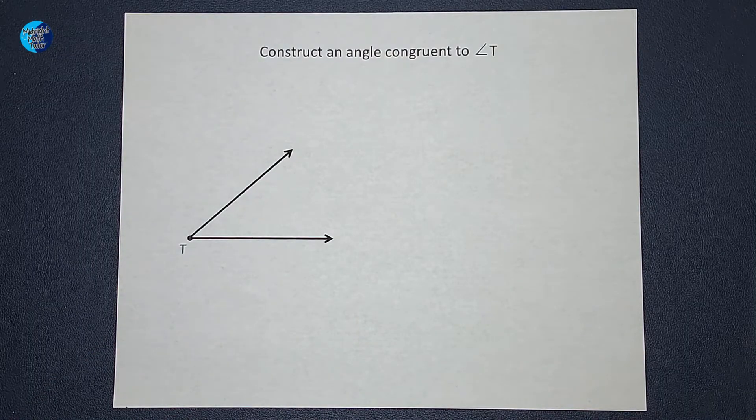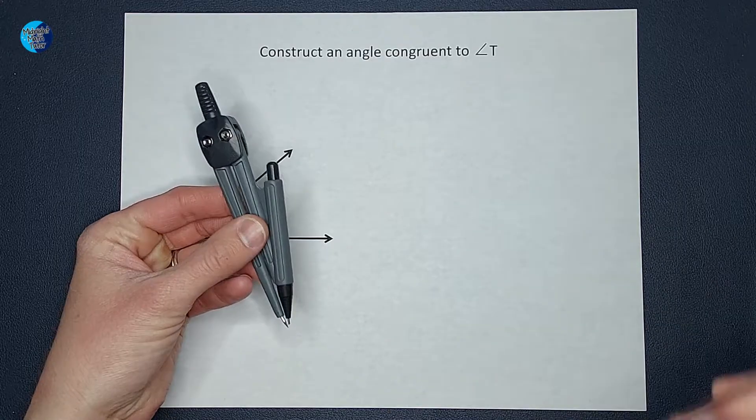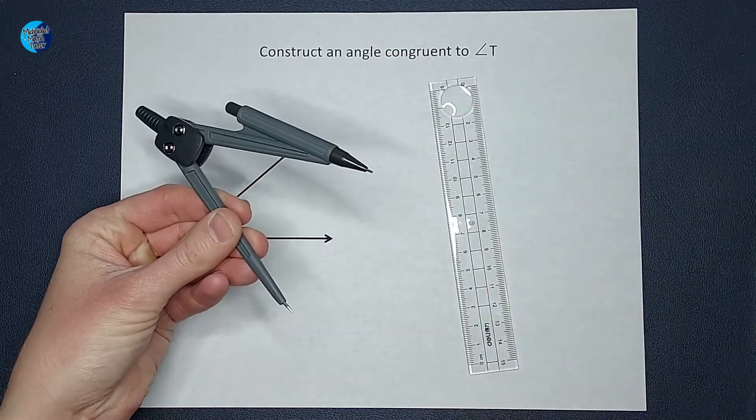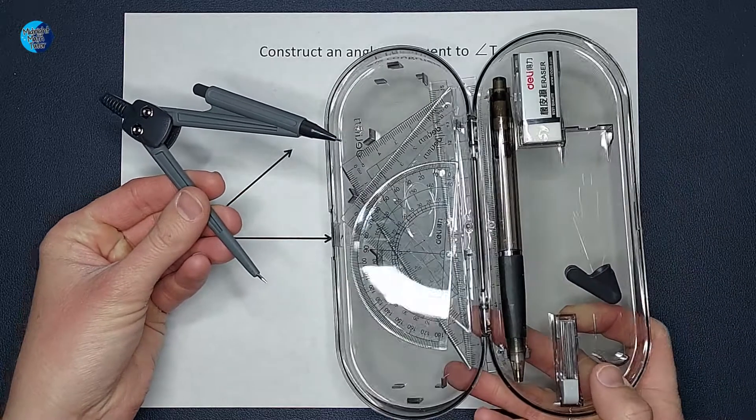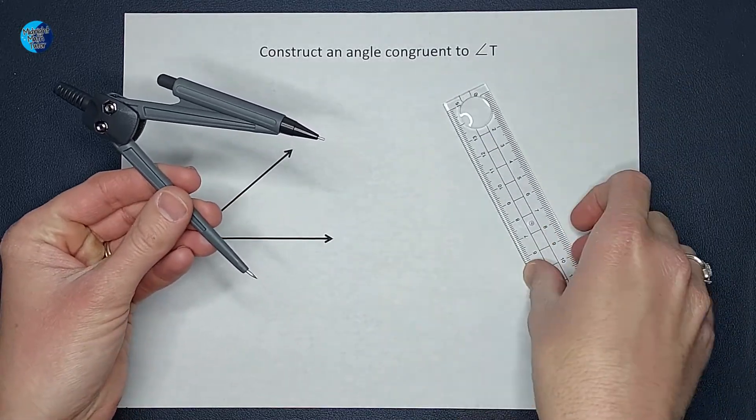Okay, so construct means we are going to use a compass and a straight edge. Now I really like this compass. I got it from Amazon. It came with this nice little set. I will have a link to it below, but whatever compass you have is probably fantastic.